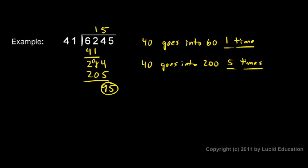And let's round again. 40 and 100. So I'm going to think 40 goes into 100 two times. So I'll put a 2 up here as my next digit. And I multiply. 2 times 1 is 2. And 2 times 4 is 8.